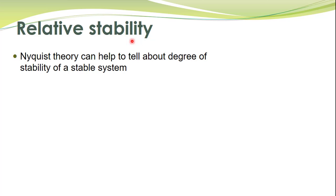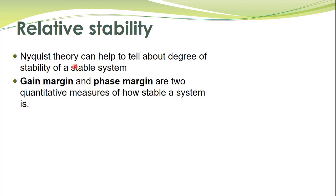In our previous lectures we learned the application of Nyquist stability criterion to determine the stability of closed loop systems. We also know that stability can be determined by other techniques, such as Routh's stability criterion and root locus techniques. The additional advantage of Nyquist theory is that we can determine the degree of stability — that is, the relative stability of systems.